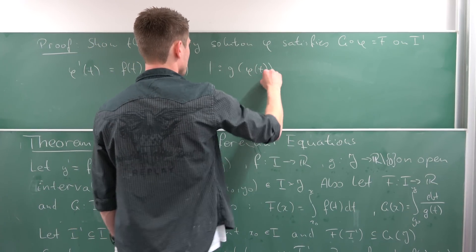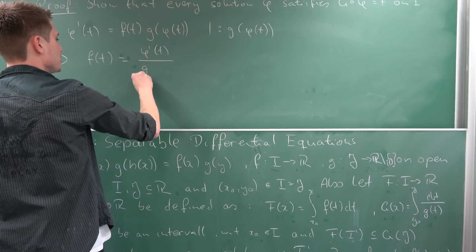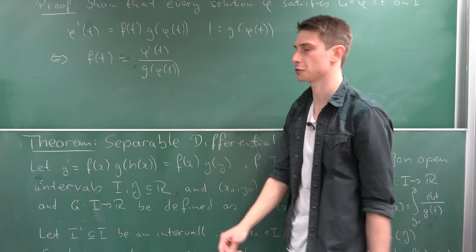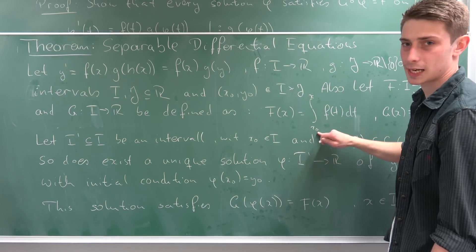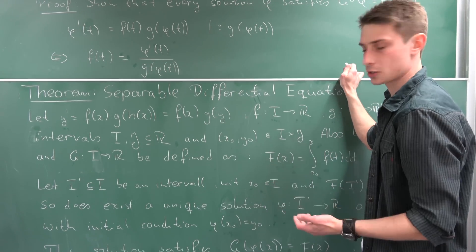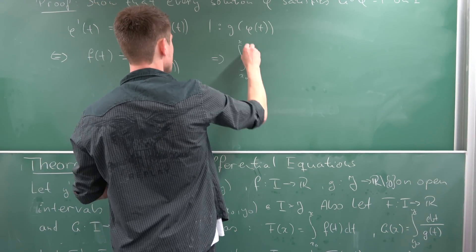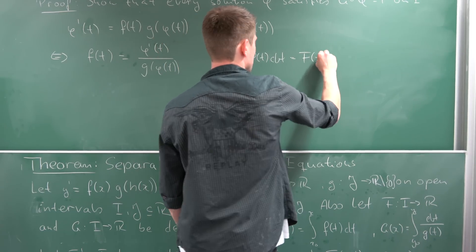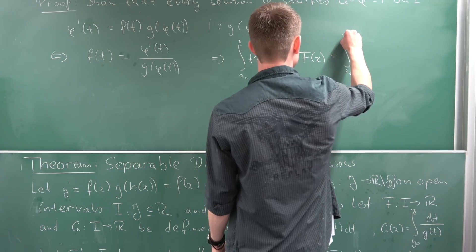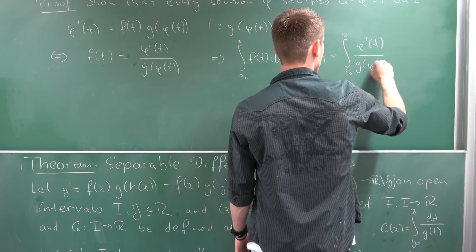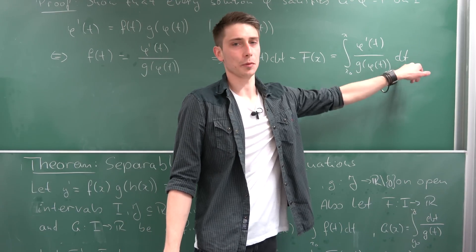Dividing gives us that f in terms of t is nothing else than phi prime in terms of t over g in terms of phi in terms of t. Like I said, we want to integrate this. The upper and lower bounds are what matter — we can use x naught to x, because integrating f in terms of t from x naught to x gives us capital F of x. So the integral from x naught to x of f in terms of t dt is indeed capital F in terms of x. We also have to integrate the right-hand side from x naught to x of phi prime in terms of t over g in terms of phi in terms of t dt. You might see something suspicious — that looks a little like some substitution.